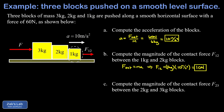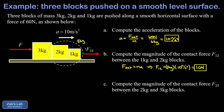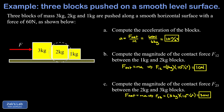Next we find the contact force F23 between the two and three kilogram blocks. To do this, we group the two kilogram and one kilogram blocks together into a single three kilogram mass. That three kilogram combination is being pushed to the right by F23 — the contact force from the three kilogram block. Writing F_net equals ma for this three kilogram collection, the only horizontal force is F23, so F23 equals 3 kilograms times 10 m/s², giving a contact force of 30 newtons.